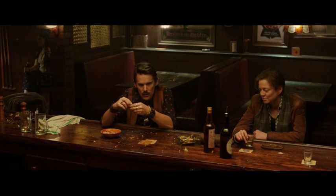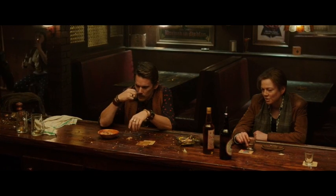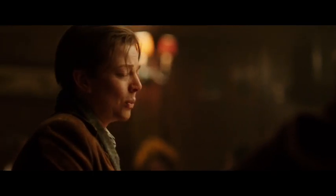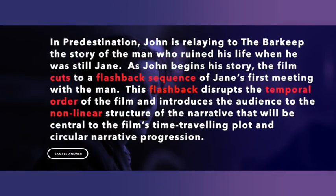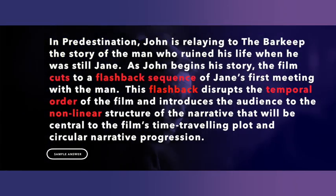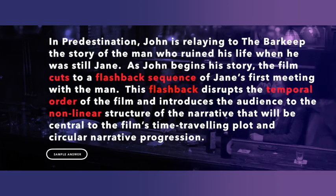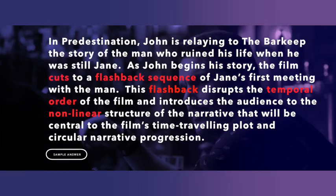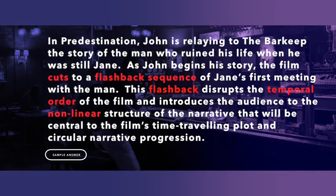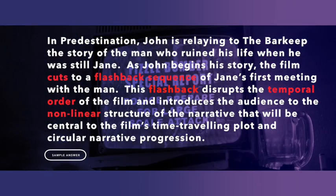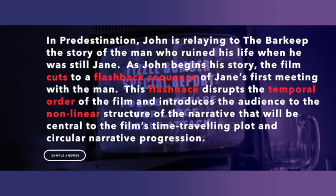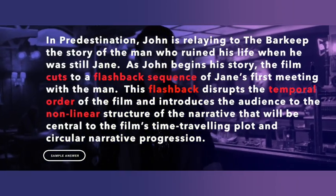In Predestination, John is relaying to the barkeep the story of the man who ruined his life when he was still Jane. As John begins his story, the film cuts to a flashback sequence of Jane's first meeting with the man. This flashback disrupts the temporal order of the film and introduces the audience to the non-linear structure of the narrative that will be central to the film's time-travelling plot and circular narrative progression.